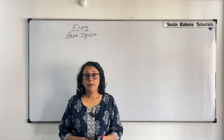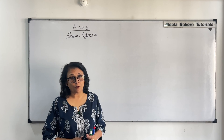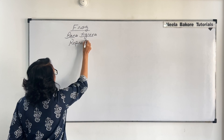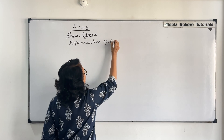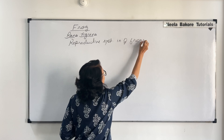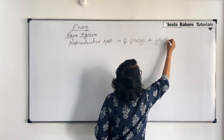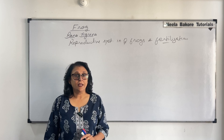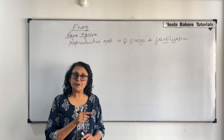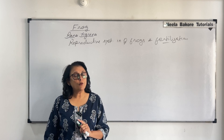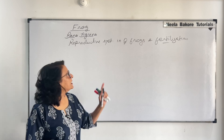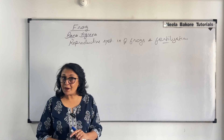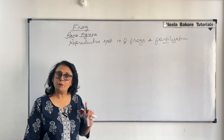Let us now talk about the reproductive system in female frogs and the process of fertilization. We have already studied the male reproductive system and seen that in male frogs the reproductive system and the urinary system are combined, so we call it the urinogenital system. In female frogs, however, there is a separate urinary system — the ureters open separately in the cloaca — and a separate reproductive system.